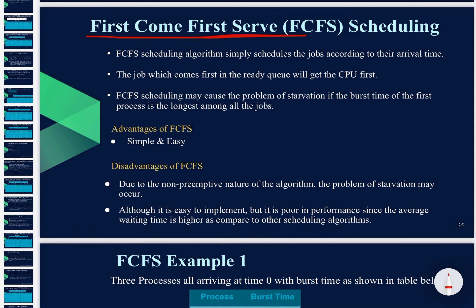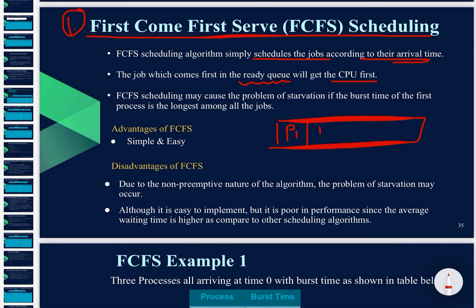First Come First Serve (FCFS) scheduling is the first scheduling algorithm. FCFS simply schedules jobs according to their arrival time. The job which comes first in the ready queue will get the CPU first. So if process 1 is coming first in the ready queue, then process 1 will get the CPU first.